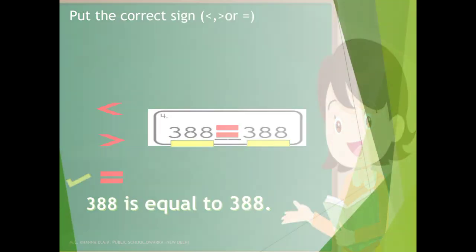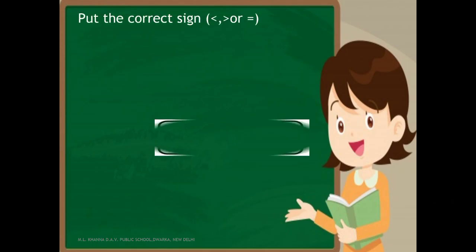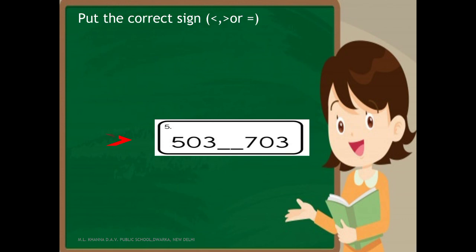The last question: compare 503 and 703. Start by comparing the leftmost digit at the hundreds place: 5 hundreds and 7 hundreds. 5 hundreds are less than 7 hundreds. That means 503 is less than 703.